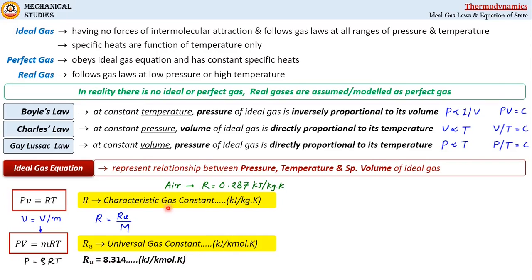Please understand this difference: Ru is the universal gas constant and R is the characteristic gas constant. Now, the molar mass or molecular weight capital M of a gas is given by mass divided by number of moles, M = m/N, where small m is mass of the gas and capital N is number of moles. So we can write number of moles N as mass divided by molar mass.